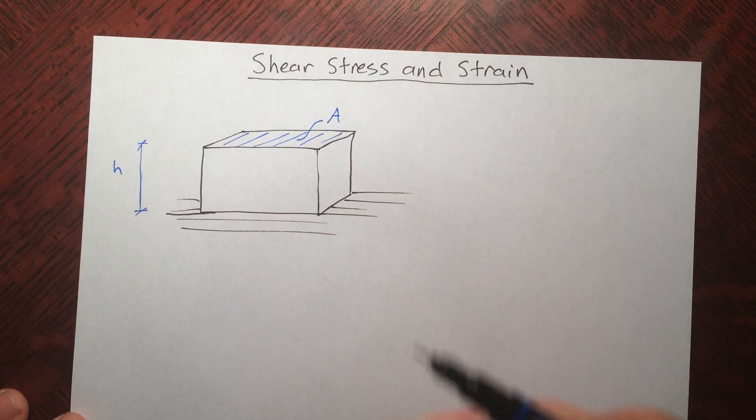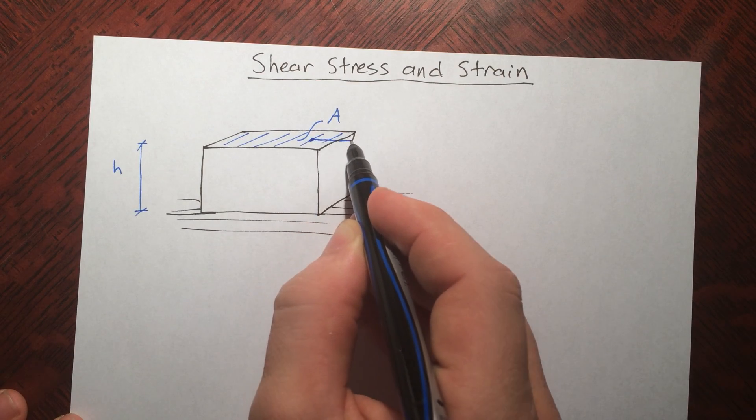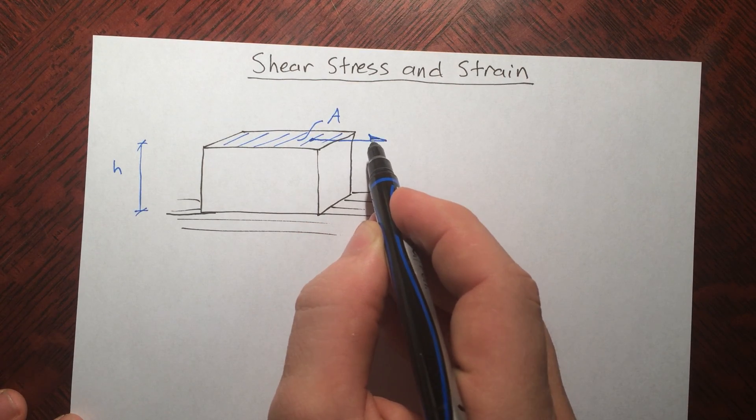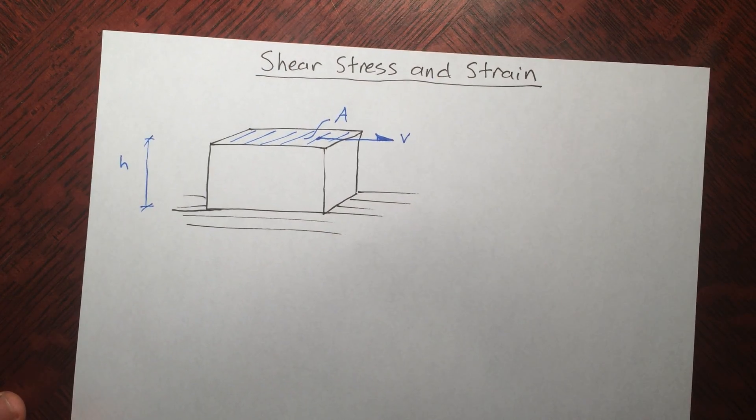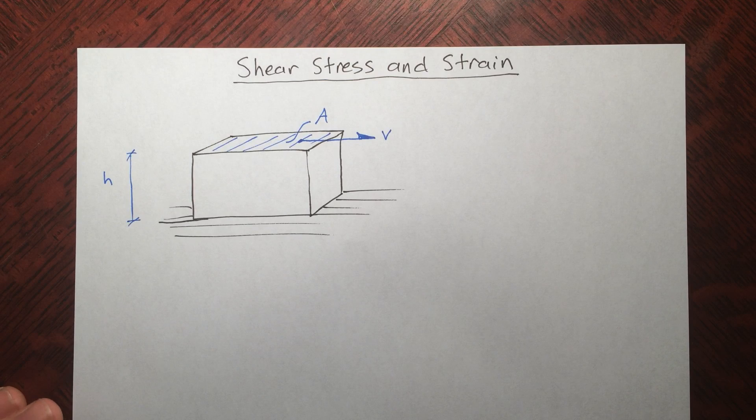In this upper area here, let's call that A, and we're pulling on it, shearing it with a force V. Any applied shear force we give it a V.